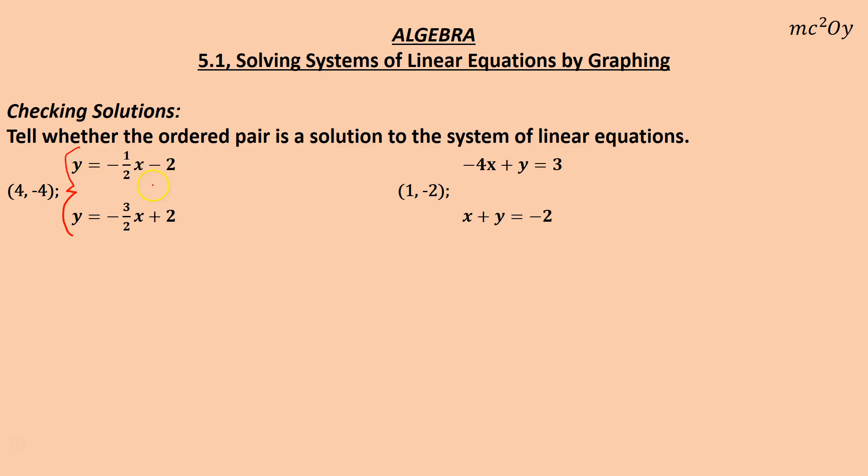y equals negative 1 half x minus 2, and y equals negative 3 halves x plus 2. This is saying that x is 4 and y is negative 4. That point, or this coordinate, when plugged in for x and y, will make both of these true statements. If it does, then this is a solution. If it doesn't, then it's not a solution.